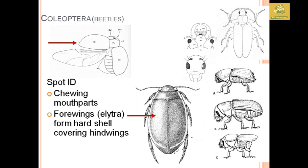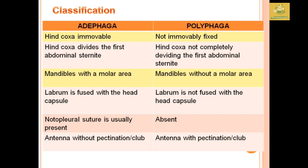In Coleoptera there are two suborders: Adephaga and Polyphaga. In Adephaga the hind coxa is immobile, while in Polyphaga it is movable. The hind coxa divides the first abdominal sternite in Adephaga but does not completely divide it in Polyphaga. Mandibles are with a molar area in Adephaga and without a molar area in Polyphaga. The labrum is fused with the head capsule in Adephaga but not in Polyphaga. The notopleural suture is usually present in Adephaga and absent in Polyphaga. Antennae without pectination or club in Adephaga, with pectination or club-like structures in Polyphaga.